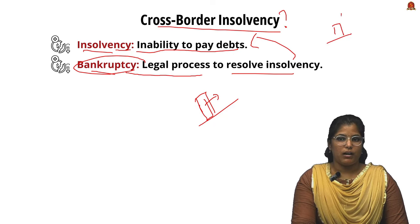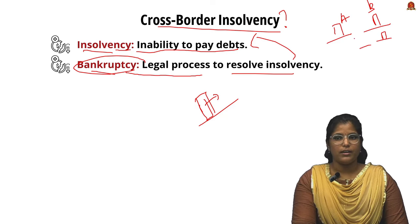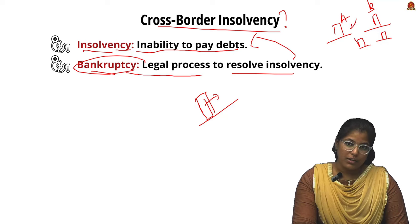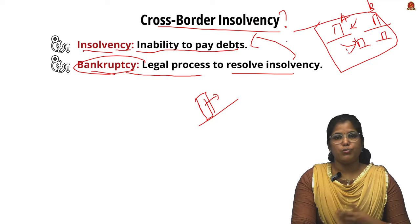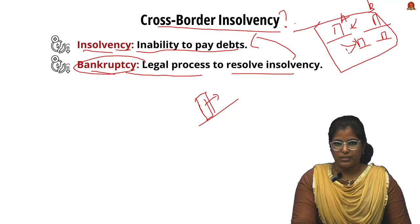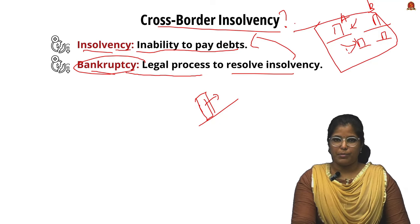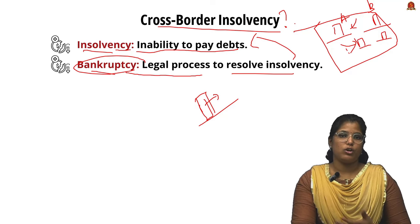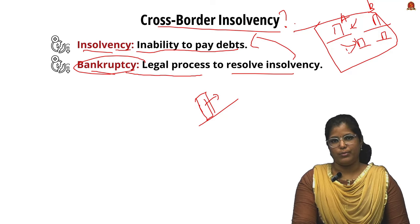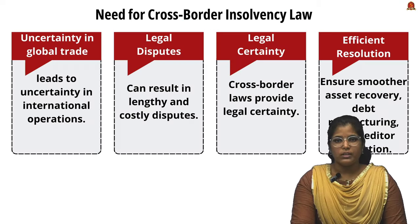What does the term cross-border insolvency mean? A company can operate in country A, country B, and many other countries, and it can have investors from many countries as well. Any company operating in more than one country is called an MNC. When these MNCs become insolvent, it is called cross-border insolvency.